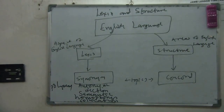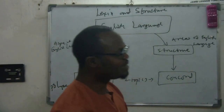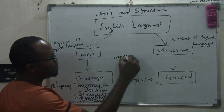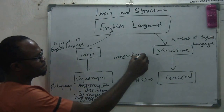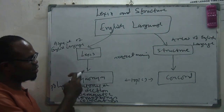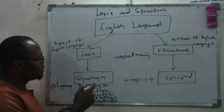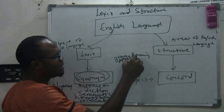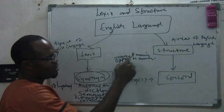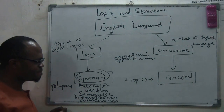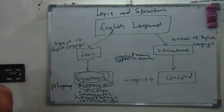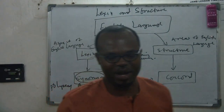When you get to an exam question and you see 'nearest in meaning,' that is under the lexis topic of synonyms. Then when you see questions about 'opposite in meaning,' what are you looking at? Antonym. You understand?